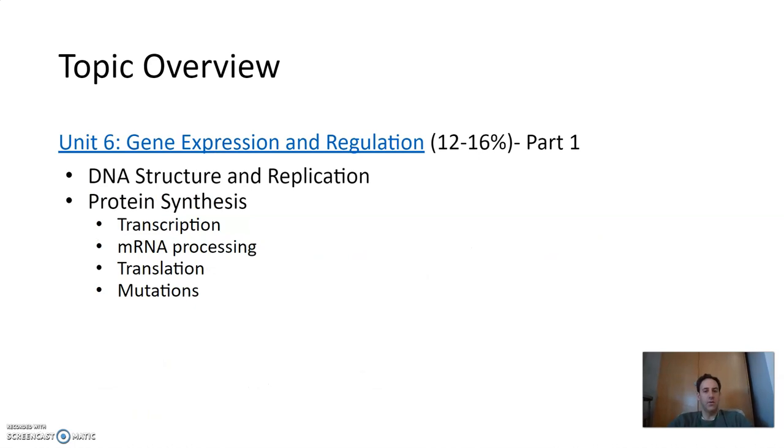Unit six, we spread across two parts. So all of unit six is 12 to 16 percent. We split it into two just because it is such a big topic. Part one for us, we looked at just DNA structure and replication and then protein synthesis, which includes transcription, mRNA processing, translation, mutations. Again, both of these, all of these topics, pretty complicated biochemical pathways. And so, again, Schoology has some videos that will walk you through those details pretty thoroughly if you want to revisit them.